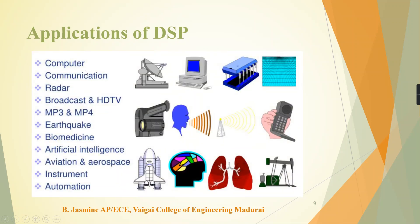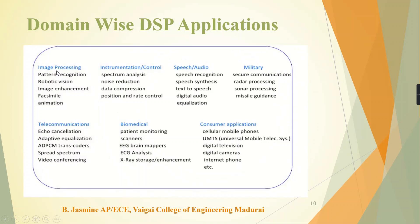Next, the applications of DSP. The main domains where digital signal processing is applied include computer, communication, radar, MP3 and MP4. For example, WhatsApp file transfer uses DSP. Earthquake vibration is captured as a signal by measuring instruments. In biomedicine, an example is hearing a womb child's heartbeat. Artificial intelligence uses DSP for recognizing retina or voice. Domain-wise DSP applications include image processing, pattern recognition, image enhancement, and animation.